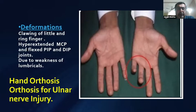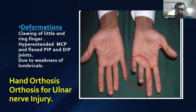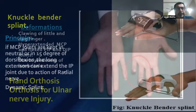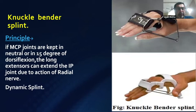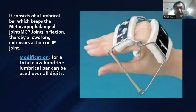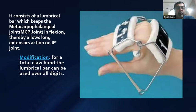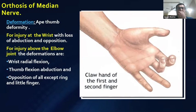For the ulnar nerve, the deformity is intrinsic minus or clawing of the little and ring fingers, with hyperextension of the MCP joint and flexed PIP and DIP joints, due to weakness of the lumbricals. The splint used is the knuckle bender splint, a dynamic splint working on the principle that if MCP joints are kept in neutral or 15 degrees of dorsiflexion, the long extensors can extend the interphalangeal joints via the radial nerve. It consists of a lumbrical bar support, keeping MCP in flexion and allowing IP joint extension. For total claw involving median and ulnar nerve, a lumbrical bar can be used over all digits.